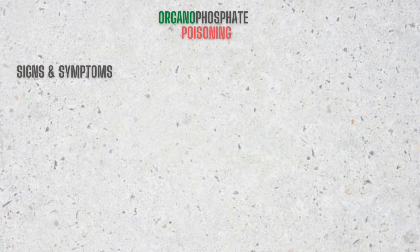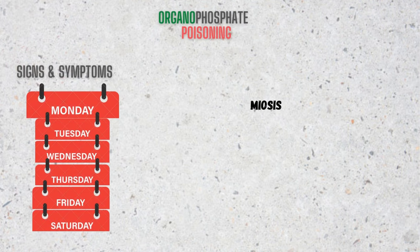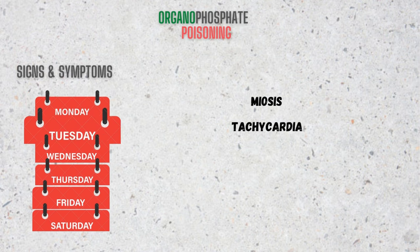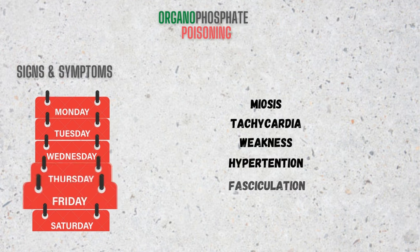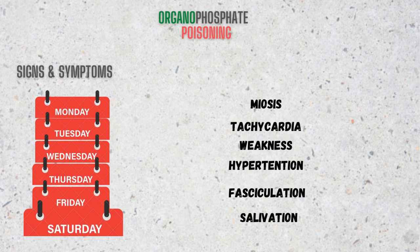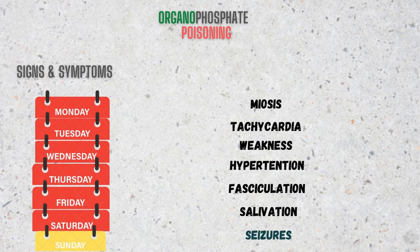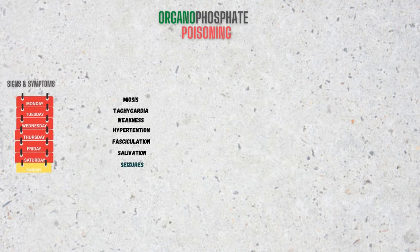I want you to count the days of a week. Starting from Monday: M for miosis, Tuesday — T for tachycardia, Wednesday equals weakness, Thursday equals hypertension, Friday equals fasciculations, Saturday for salivation, and Sunday for seizure. But Sunday is a holiday, so seizure can be present or absent depending on the severity of toxicity.